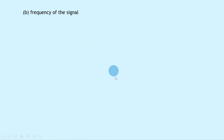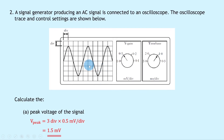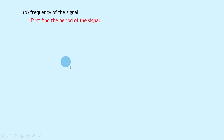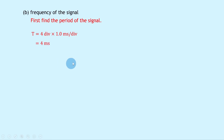Part B says to calculate the frequency of the signal. To get the frequency we first calculate the period by dealing with the horizontal plane. One complete wave takes up four divisions, and the time-based setting is 1.0 milliseconds per division. So T equals four divisions times 1.0 milliseconds per division, giving 4 milliseconds, which is 4 × 10⁻³ seconds.